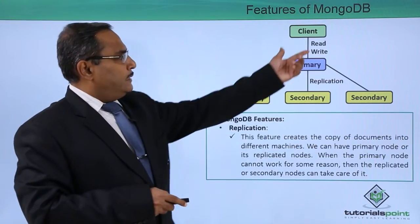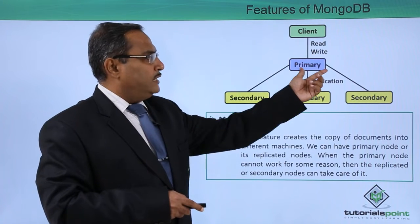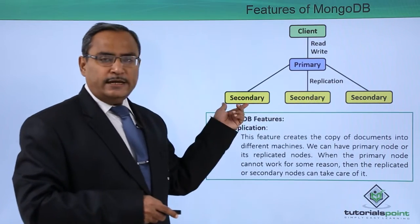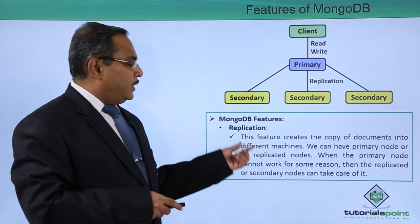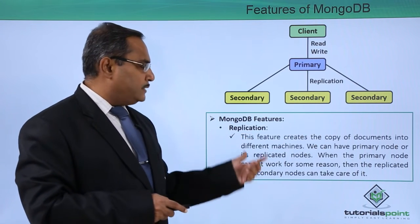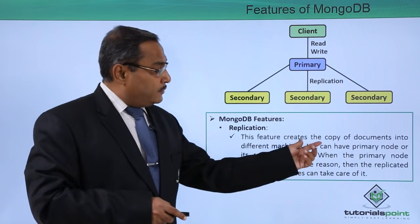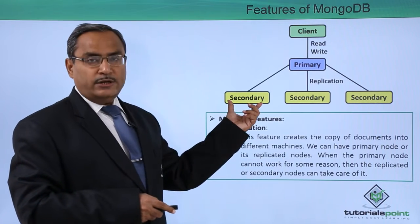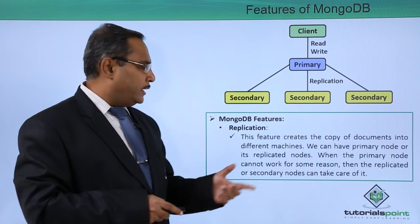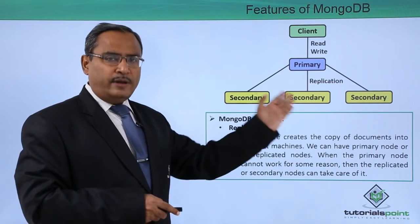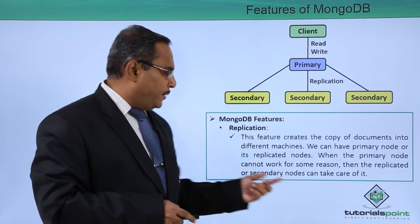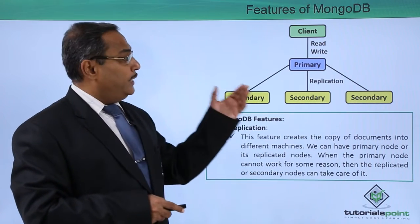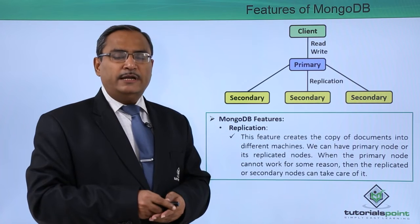A client performs read and write operations on the primary node, and the primary node replicates data onto the secondary nodes. Replication creates copies of documents on different machines. We can have a primary node and its replicated secondary nodes. When the primary node cannot work for some reason, the secondary or replicated nodes take over, which increases availability and accessibility.